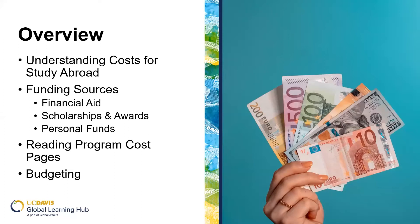At the Global Learning Hub, our office can assist you with understanding costs for study abroad. On our website, we offer a webpage dedicated to learning more about funding resources. This page includes information about funding sources such as financial aid, scholarships and awards, as well as ideas for your personal networks and funding options. We also provide budgeting worksheets to help you line out your financial viability and commitment to a program, plus budgeting tips and student testimonials. We'll show you where to locate this page and discuss each funding resource and program cost pages.